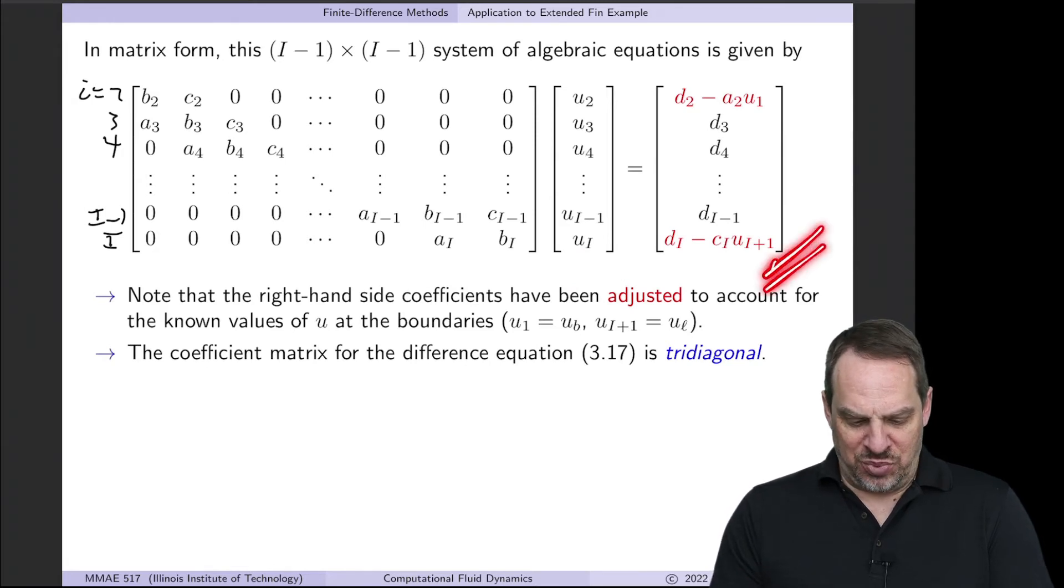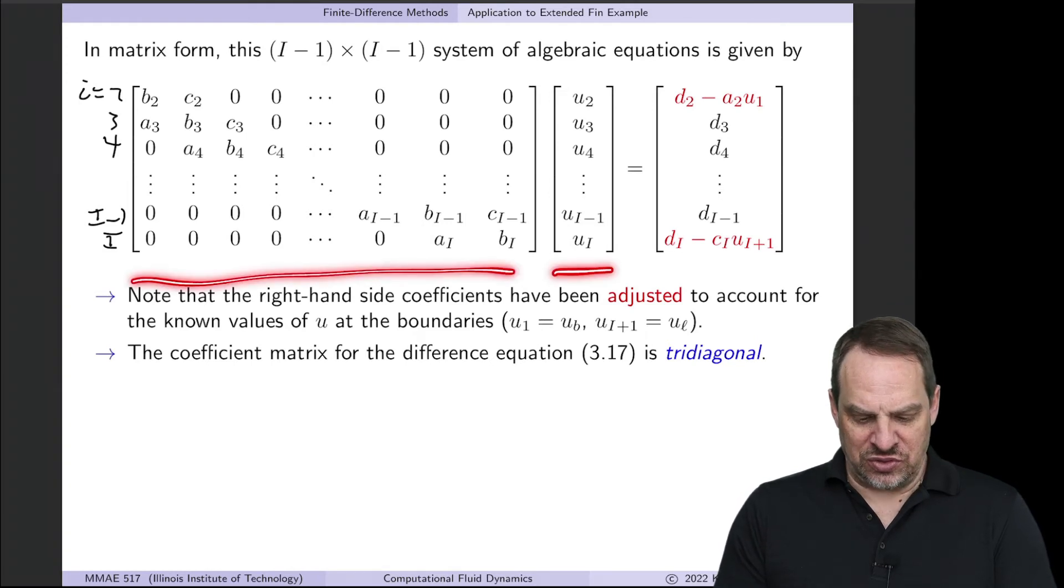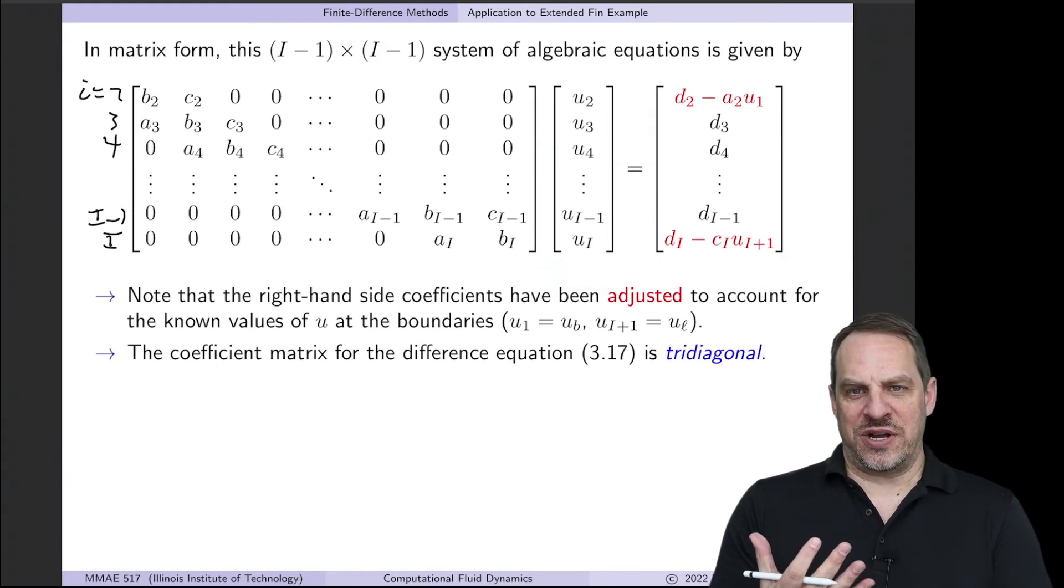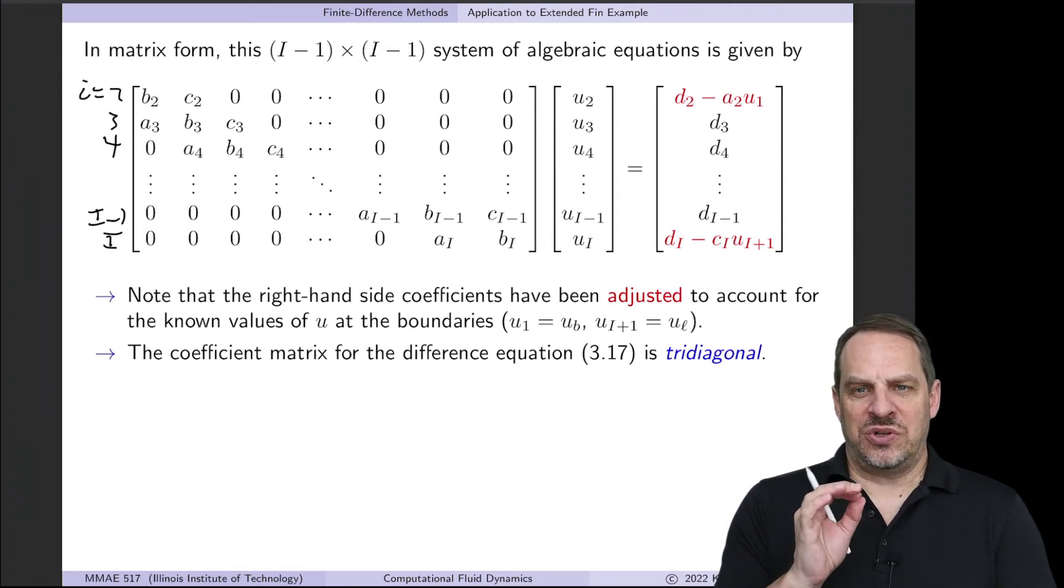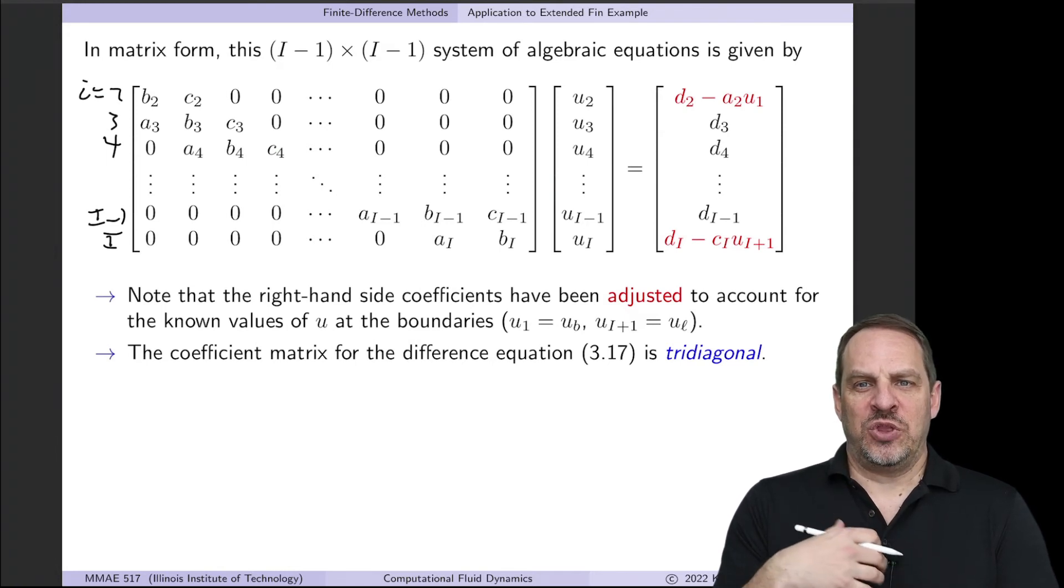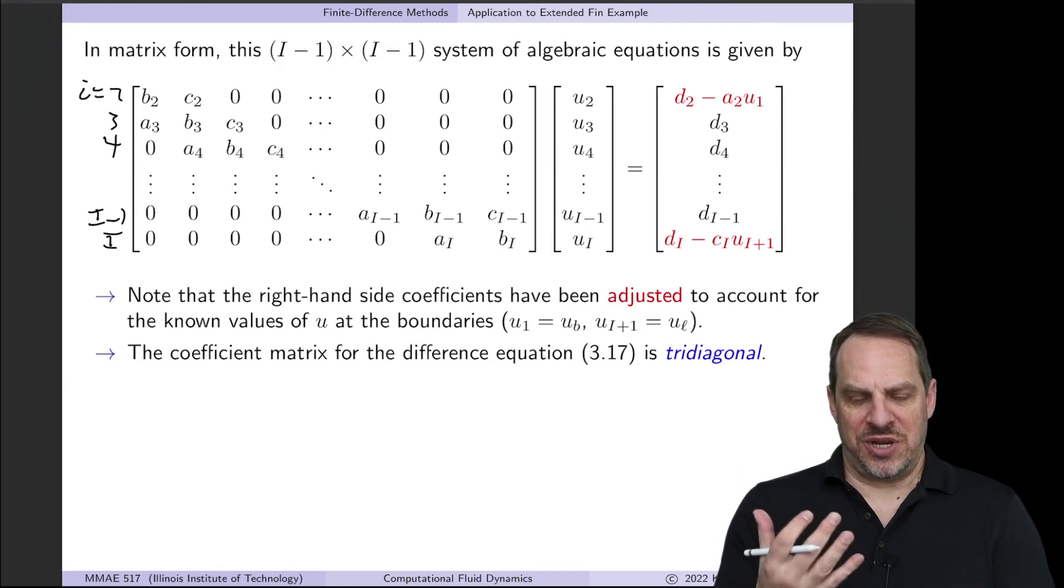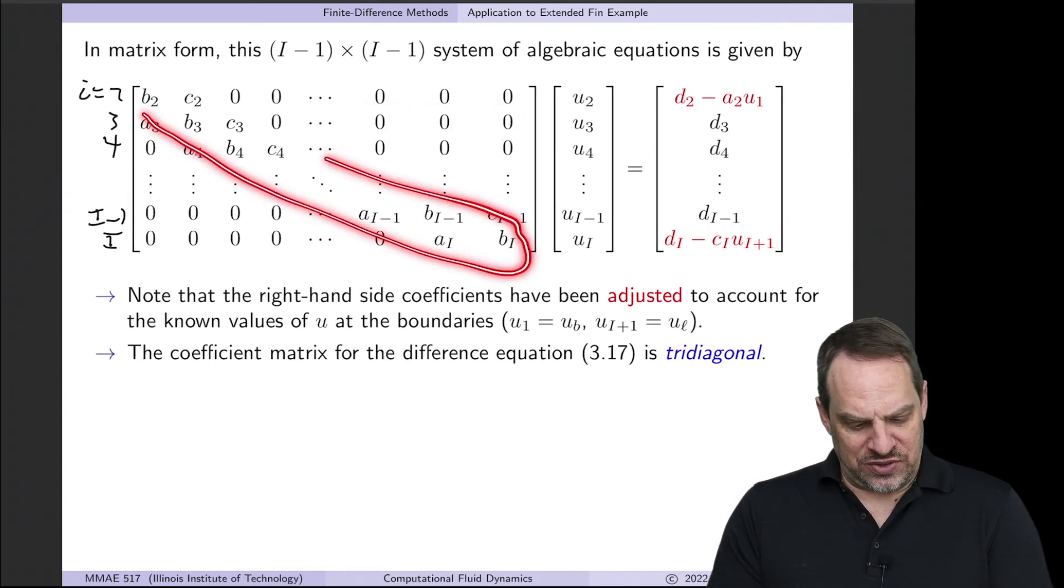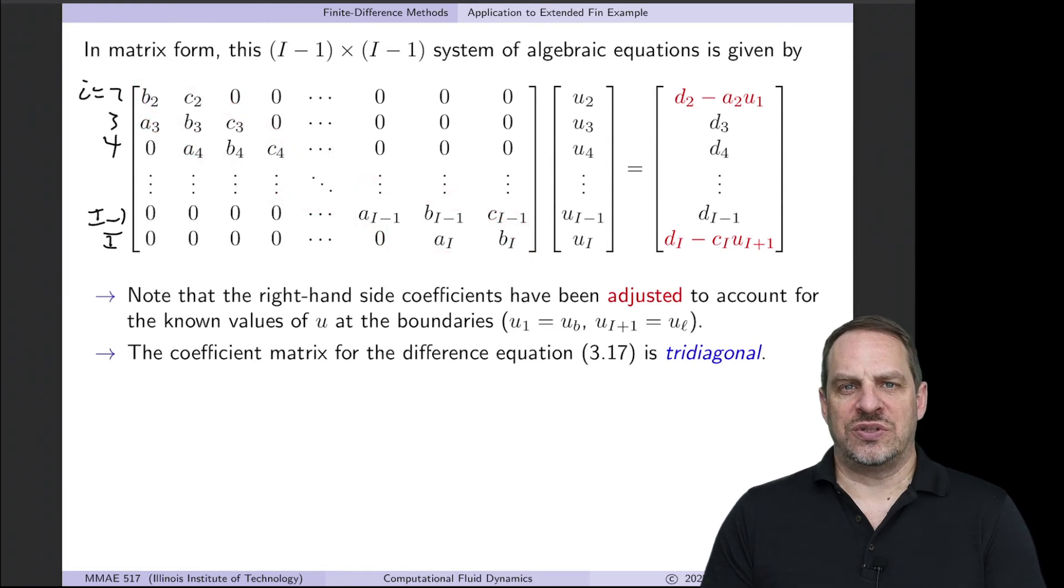But what you see is we end up with a big system of linear algebraic equations. Coefficient matrix times the solution vector of unknowns is equal to the known right-hand side vector. We know all the a's, b's, and c's. We know all the d's. So the only unknowns are the u's. Once again, not only is this a system of linear algebraic equations, it happens to be a tridiagonal system. Remember I said this when we introduced the finite difference methods. One of the advantages is we typically get sparse structured matrices. Sparse meaning there's lots of zeros, and structured meaning there is some structure to the matrix, in this case tridiagonal.